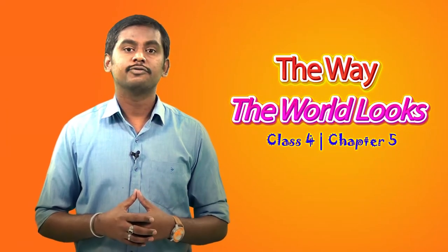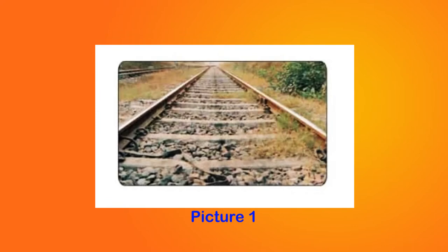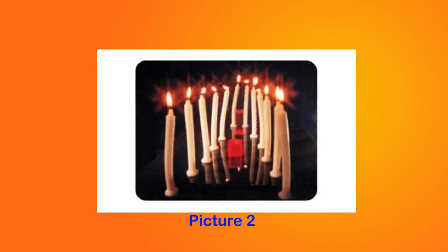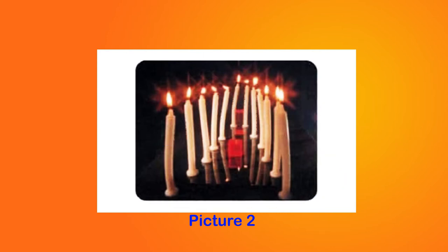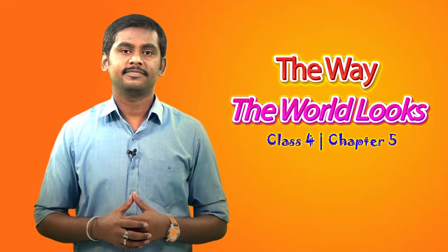Let's look at these pictures and discuss why things look wide and big at one end but narrow and small at the other end. In the first picture, one end of the railway track looks wide and big while the other end looks narrow and small, as both ends are being seen from different distances. In the second picture, the distance between the rows of candles looks wide from one end and narrow from the other end due to the same reason. Children, I have got you few tasks — let's do it.